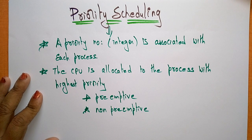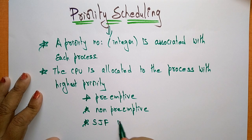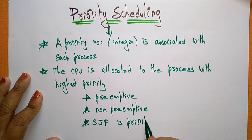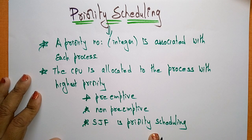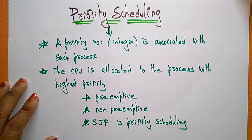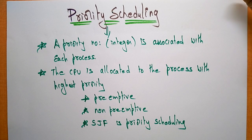Priority scheduling also works in non-preemptive mode. Additionally, the Shortest Job First algorithm is a form of priority scheduling, but in reverse order — it takes the smallest burst time first. In SJF, the priority is the inverse of the CPU burst time.